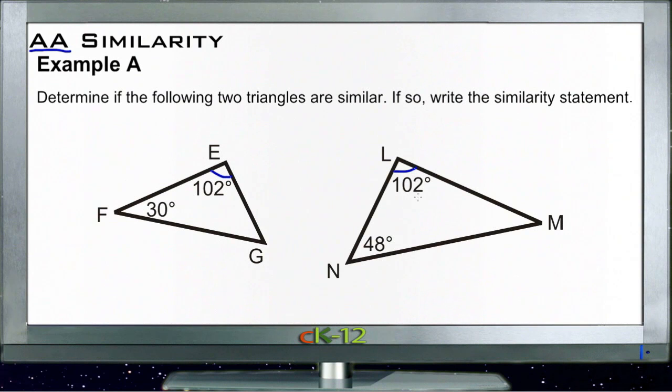We have 102 degrees here and 48 degrees down here, so we have a total of 150. And 150 plus something has to equal 180 since this is a triangle, so that means that missing angle over here must be 30 degrees.